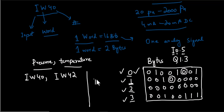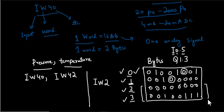For analog addressing, something like IW 2 means these two bytes — byte 2 and byte 3 — and all of its 16 bits together represent one analog value.